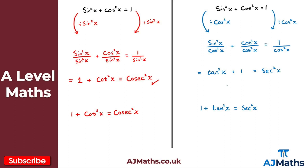We can rewrite this as 1 plus tan²x equals sec²x. And there we have it — that's our proof, giving us the derivation of both new trig identities. That brings us to the end of this video on further trig identities. In the next video we'll start taking a look at the inverse trig functions.